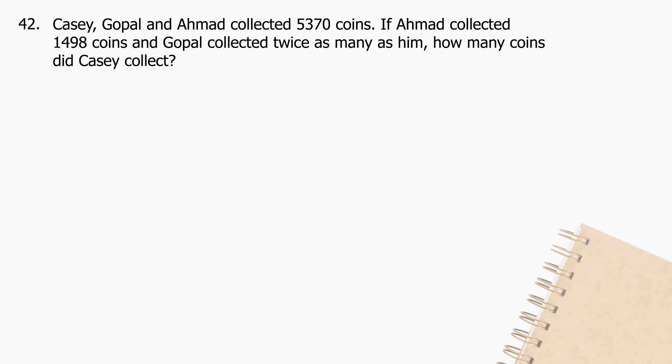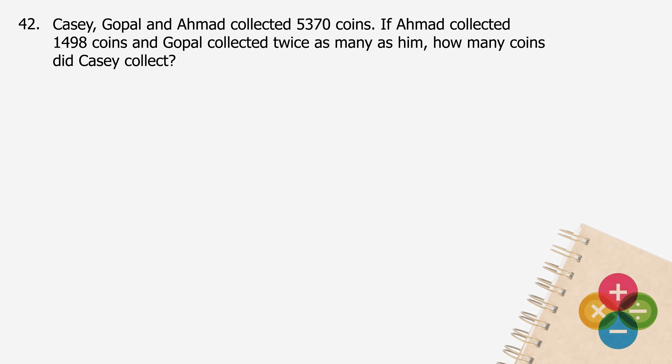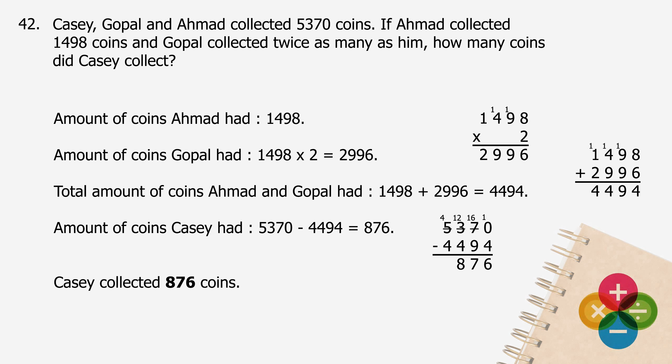Question 42: Casey, Gopal, and Ahmaud collected 5,370 coins. Ahmaud collected 1,498 coins and Gopal collected twice as many as him. How many coins did Casey collect? Gopal had 1,498 multiplied by 2 equals 2,996 coins. The total for Ahmaud and Gopal is 1,498 plus 2,996 equals 4,494. The amount of coins Casey had will be 5,370 minus 4,494, and the difference is 876. Casey collected 876 coins.